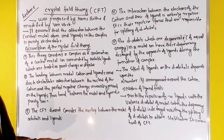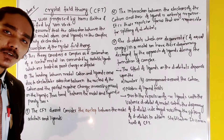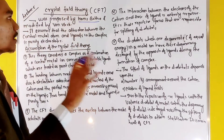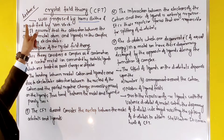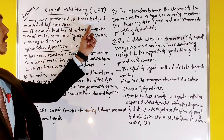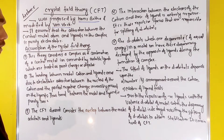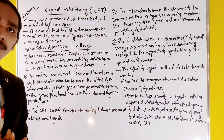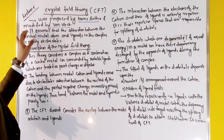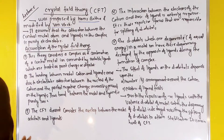First of all, I am going to discuss point by point. Crystal field theory was proposed by Hans and Fajans and modified by Van Vleck. In the case of Hans and Fajans, this theory was proposed and we are going to discuss crystal field theory in the case of complex compounds, and how this theory was further modified.